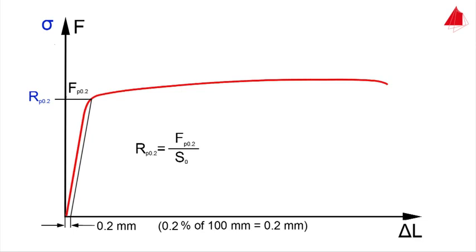Tensile strength, percentage elongation after fracture, and percentage reduction of area are calculated in the same way as in the first test.